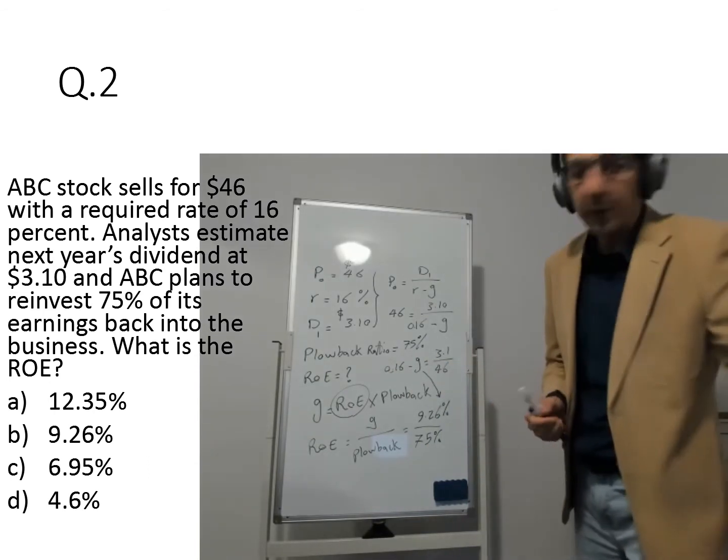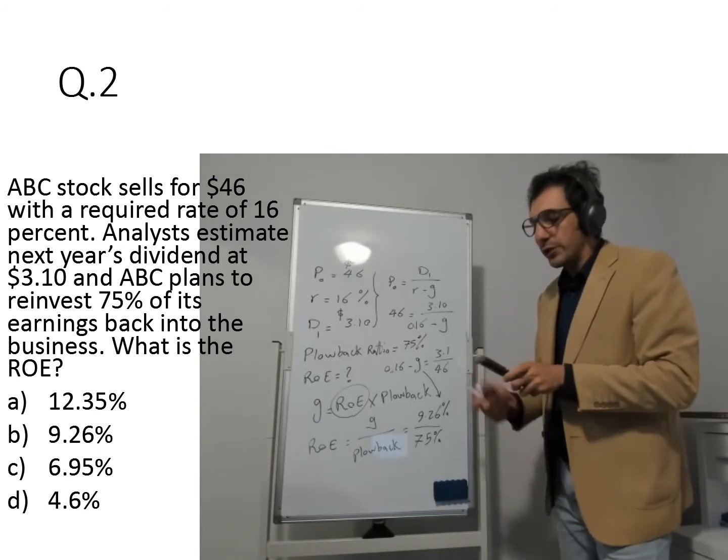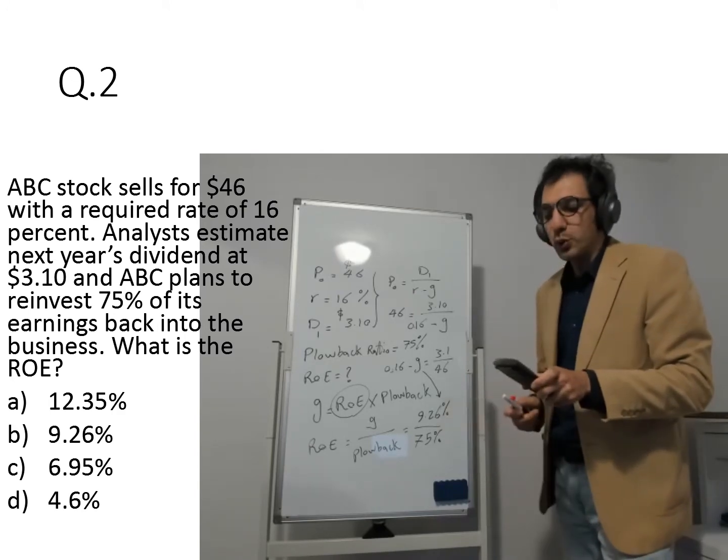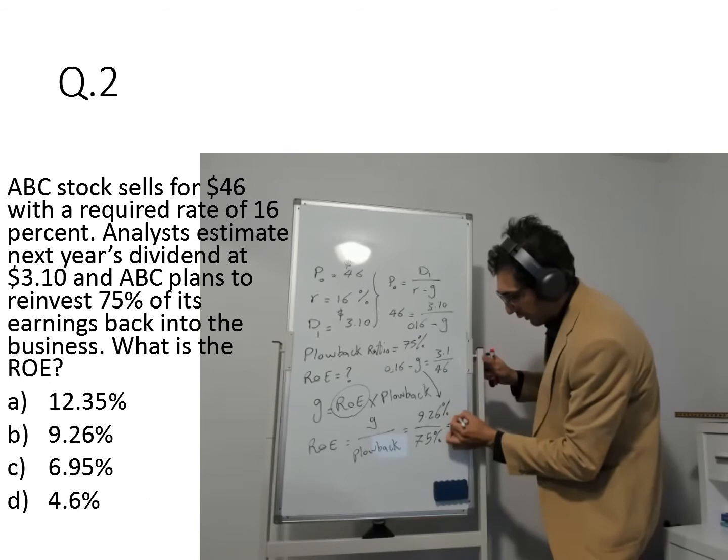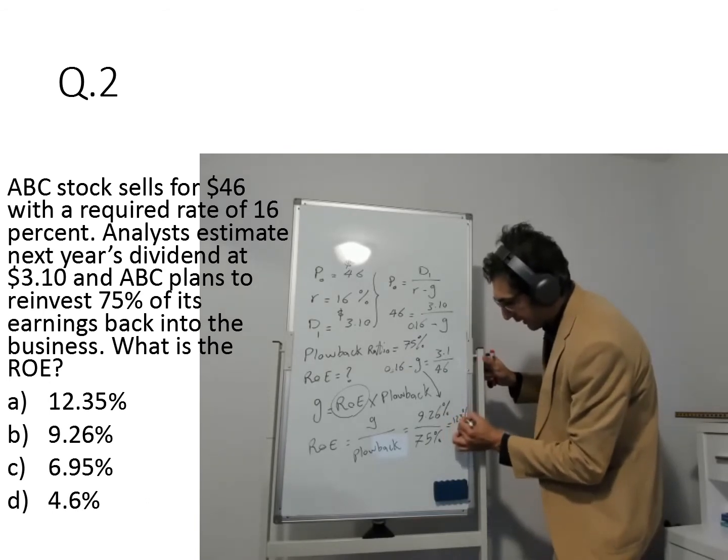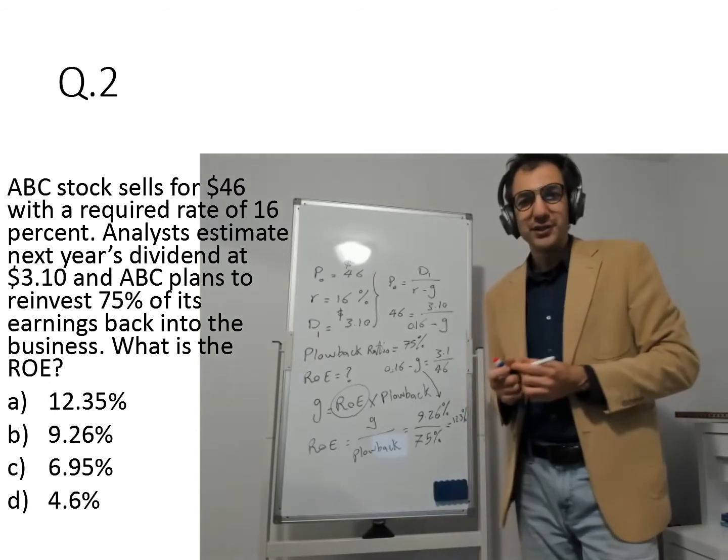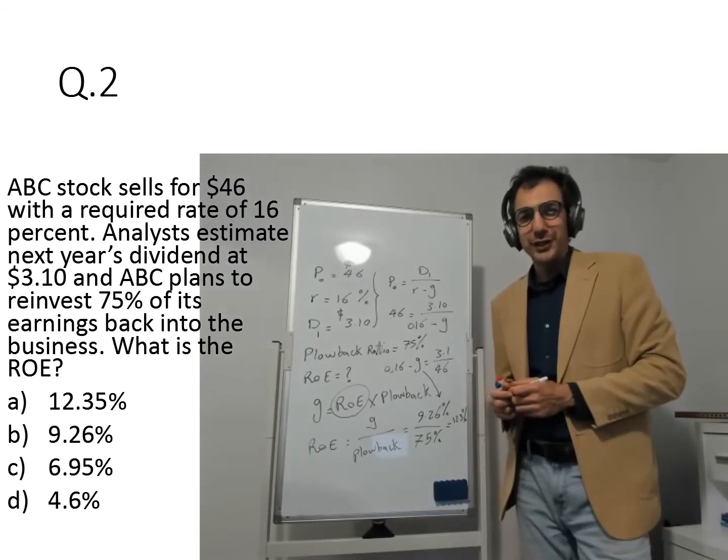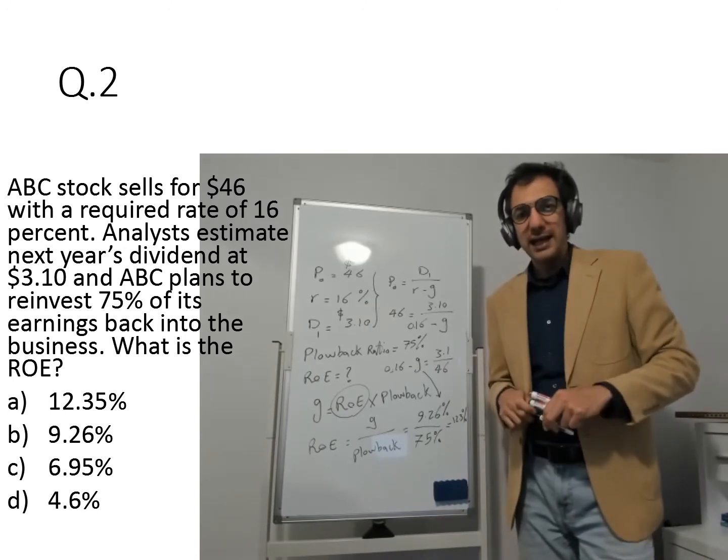And then I'm multiplying that by 75%. So if you divide it by 75%, you get your ROE at 12.3%. So 12.3%, that's your ROE. So if you look at the option, you see, first one is giving you 12.35%, which is the answer we're looking for. And that's how we found the ROE. Now let's look at the last question, question three.